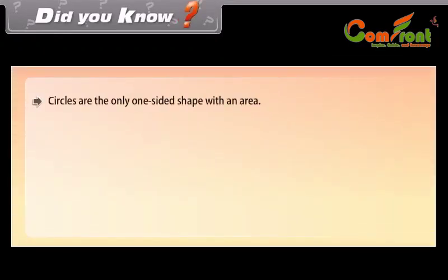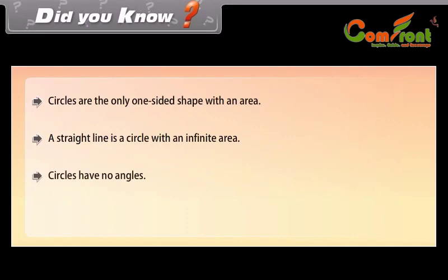Did you know? Circles are the only one-sided shape with an area. A straight line is a circle with an infinite radius. Circles have no angles. A circle has an infinite number of lines of symmetry.